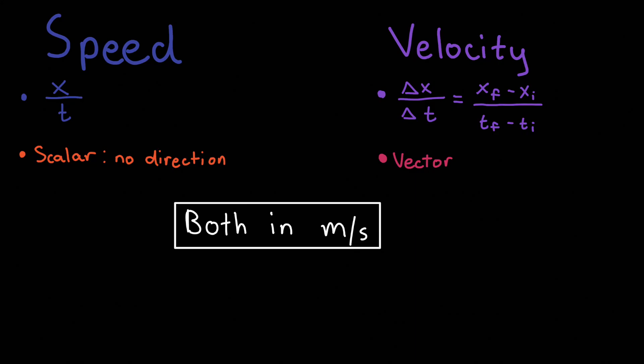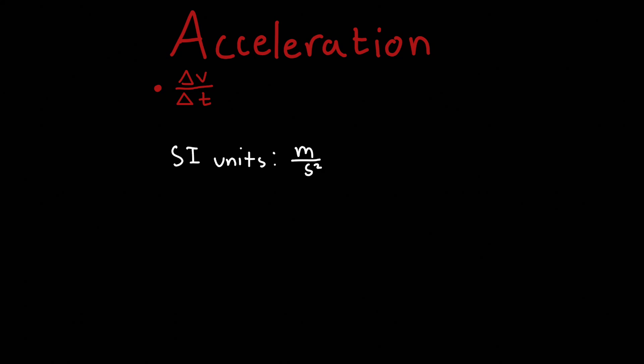Speed is related to velocity in that if speed were to change, the velocity's magnitude would change. Now let's define acceleration, which is a change in velocity over time. The SI units of acceleration are meters per second squared, or meters per second per second. This change in velocity is always final velocity minus initial velocity.